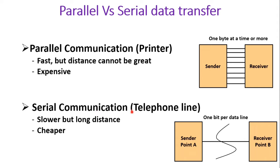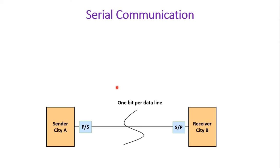On the other hand, serial communication, like a telephone line, uses only a single wire between sender and receiver, and only one bit can be transmitted at a time. The advantage is that it can cover long distances — if you want to transmit data from one city to another, serial communication is better. It is also cheaper because only one wire is used. The disadvantage is that it is slower, since we must wait for each bit to finish before the next can be sent.